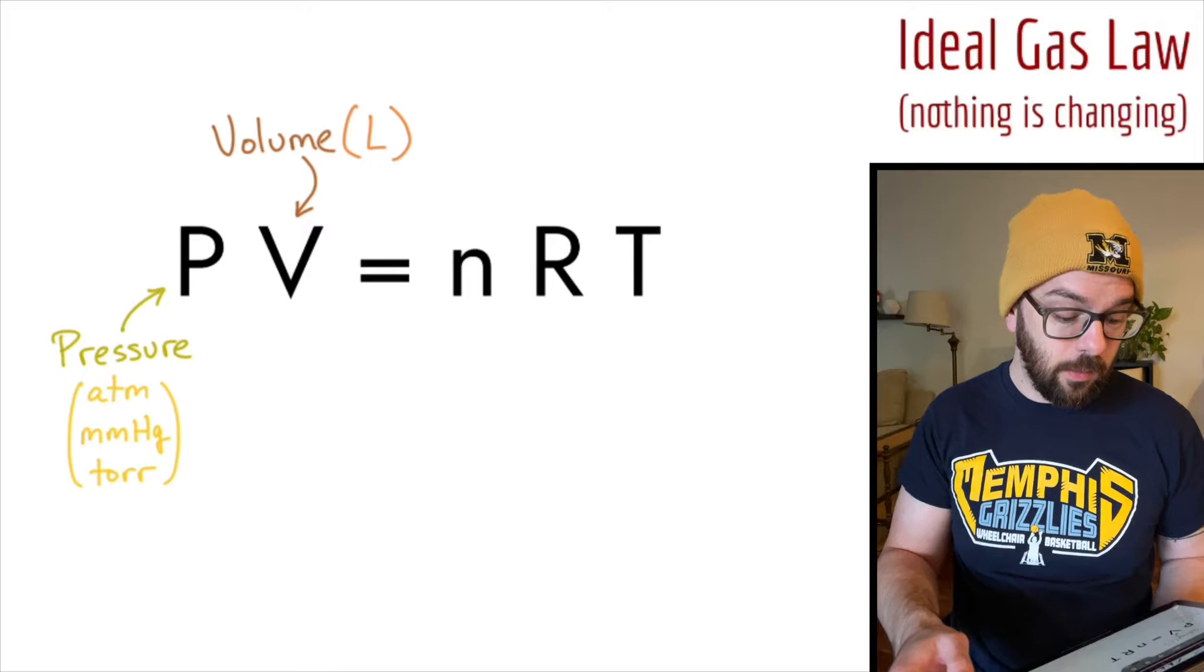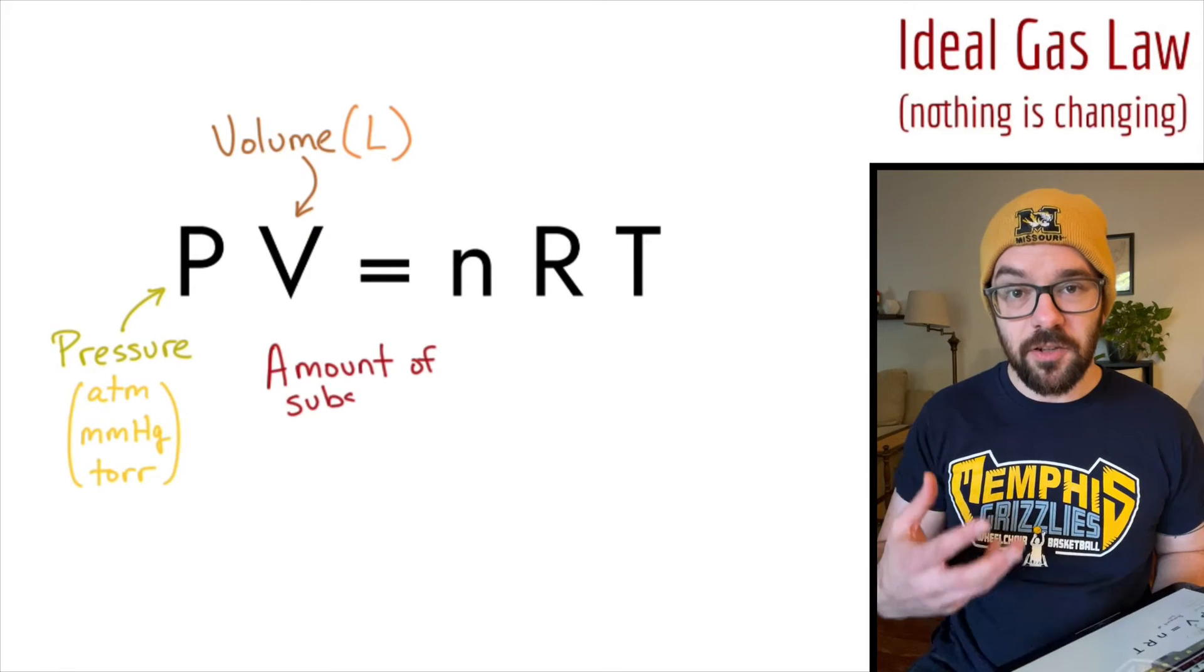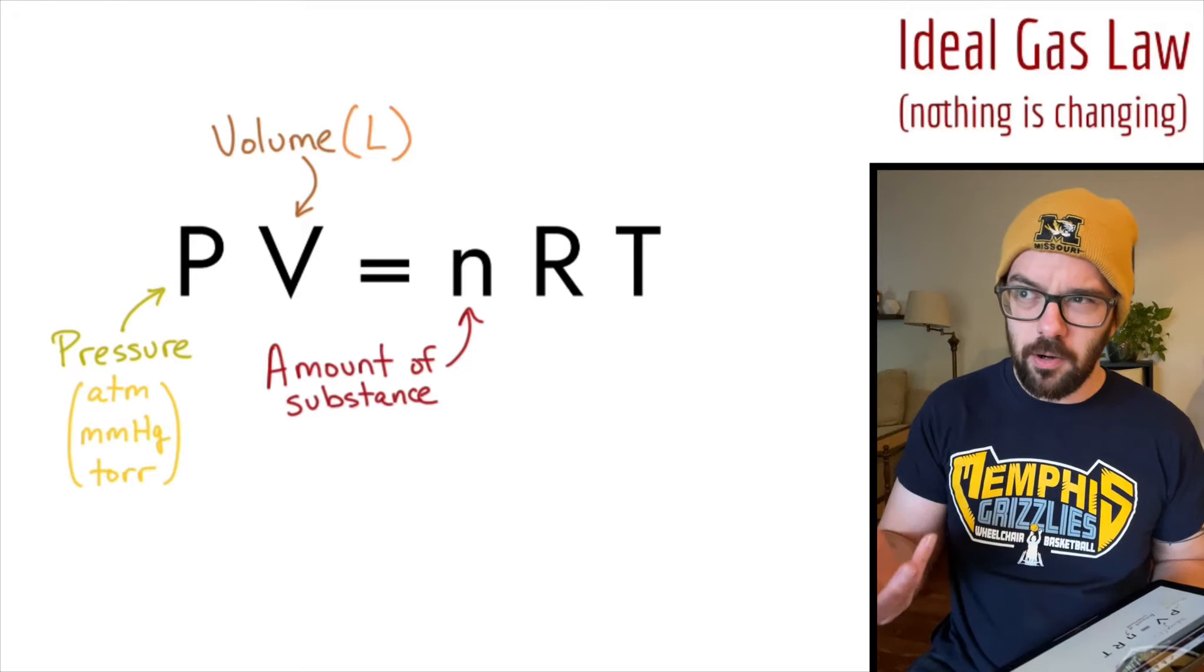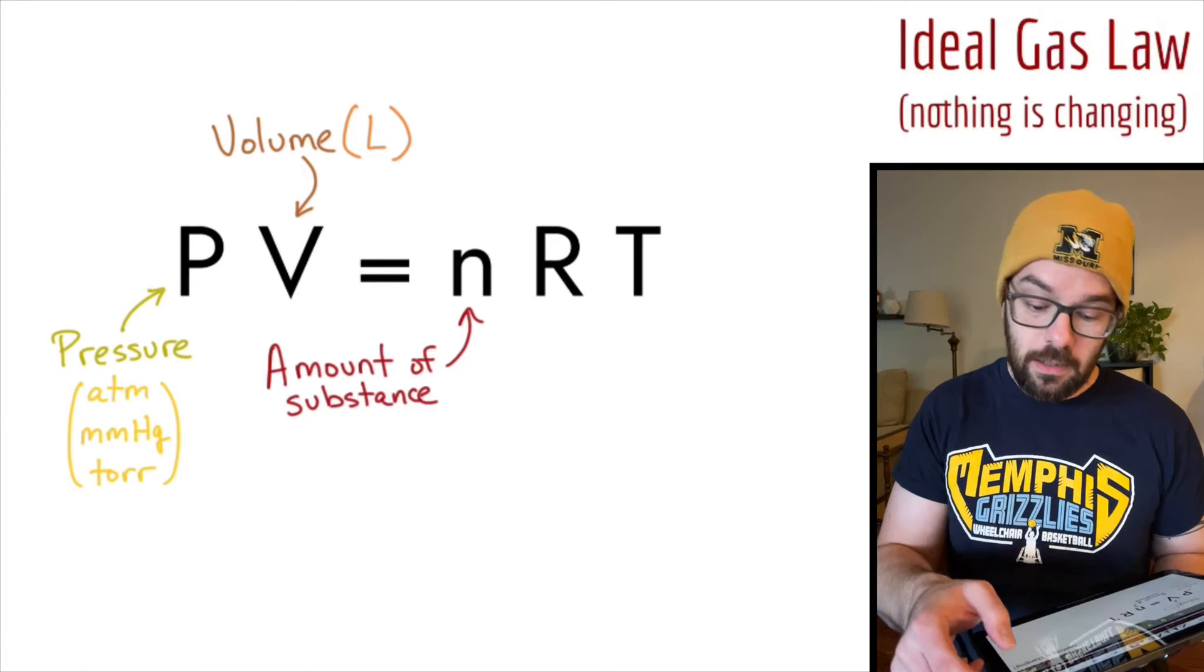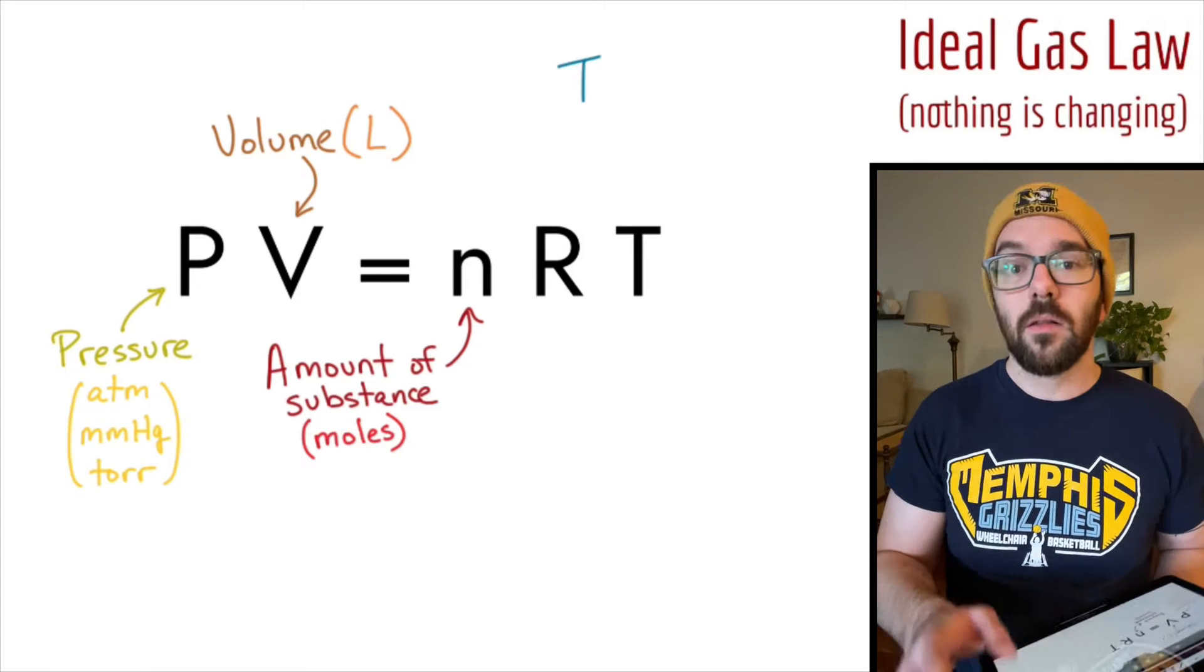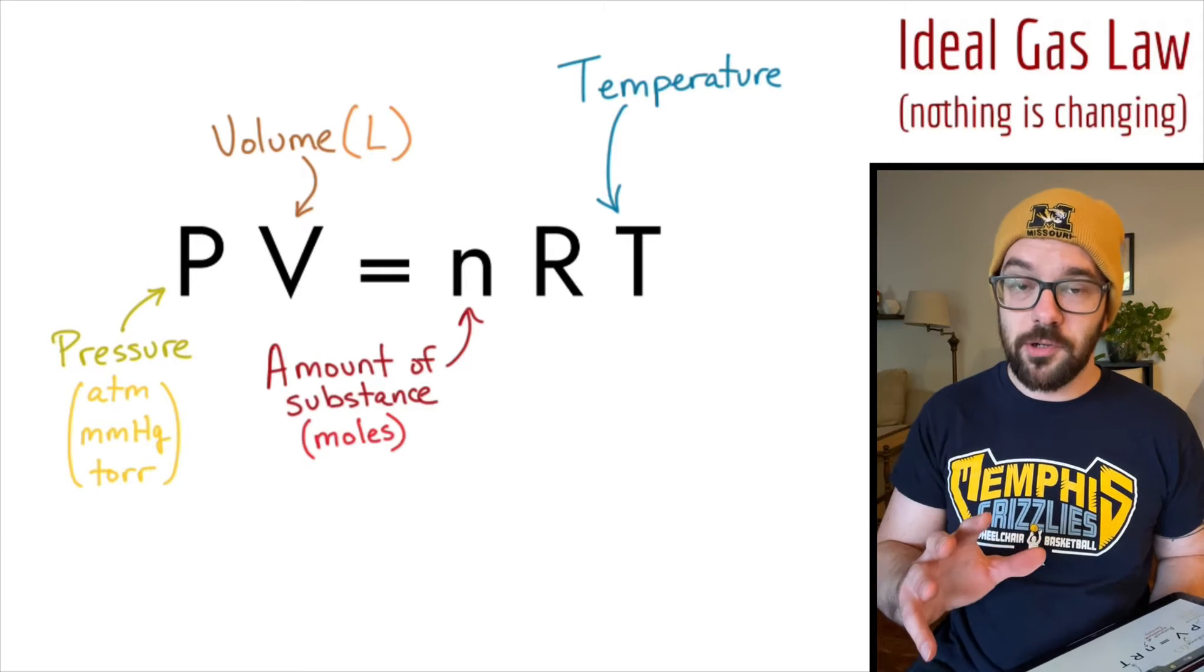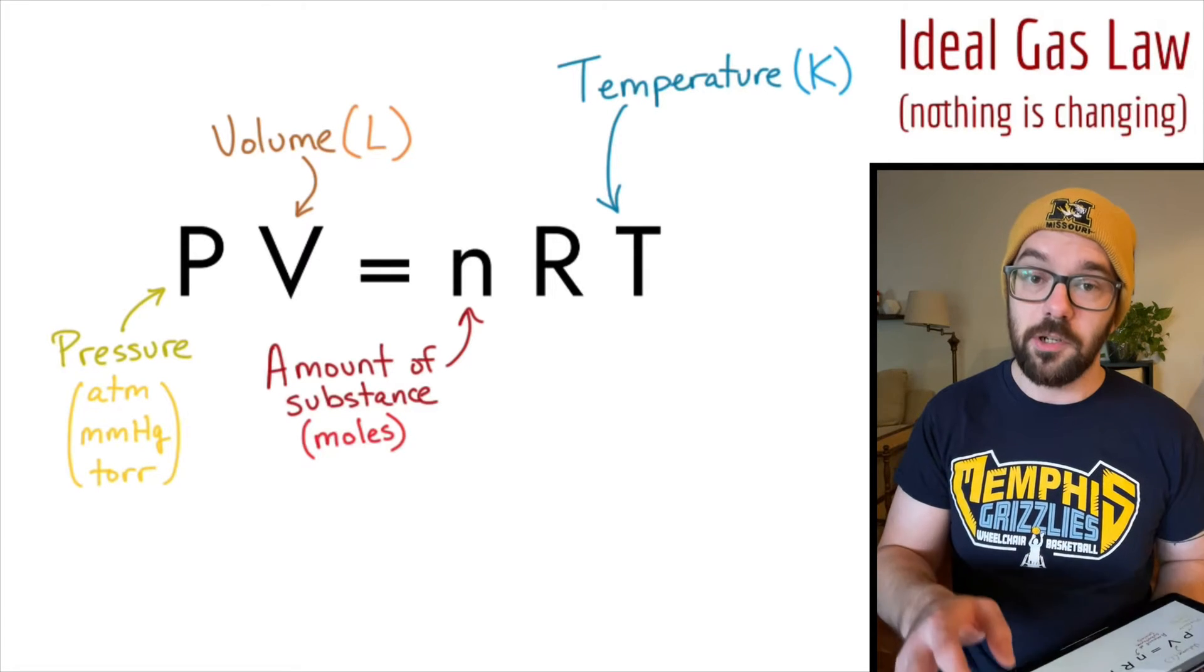Next, we have the volume, and that's going to come up in liters usually. The next variable is n, which is the amount of substance, or the number of particles really, but we measure that in moles. Moles will tell us how many particles there are, or in other words, the amount of substance. Let's skip R for a second and go to T, which is for temperature, and the units of temperature are always going to be the same thing, which is going to be Kelvin.